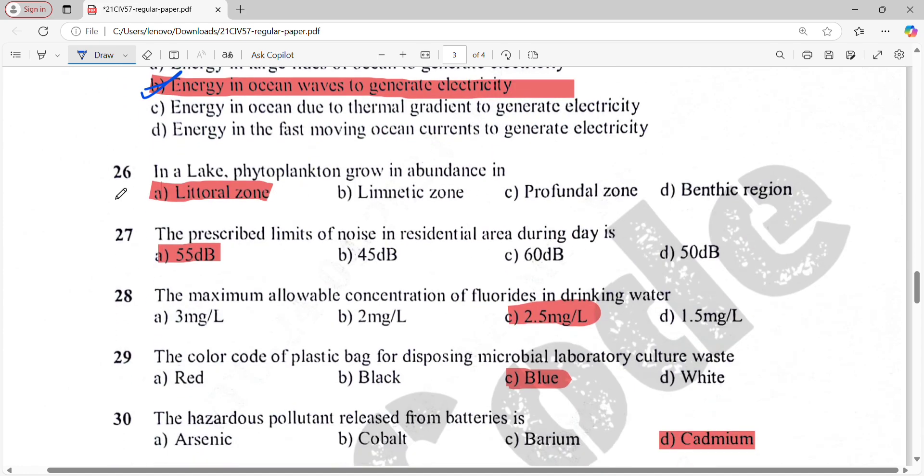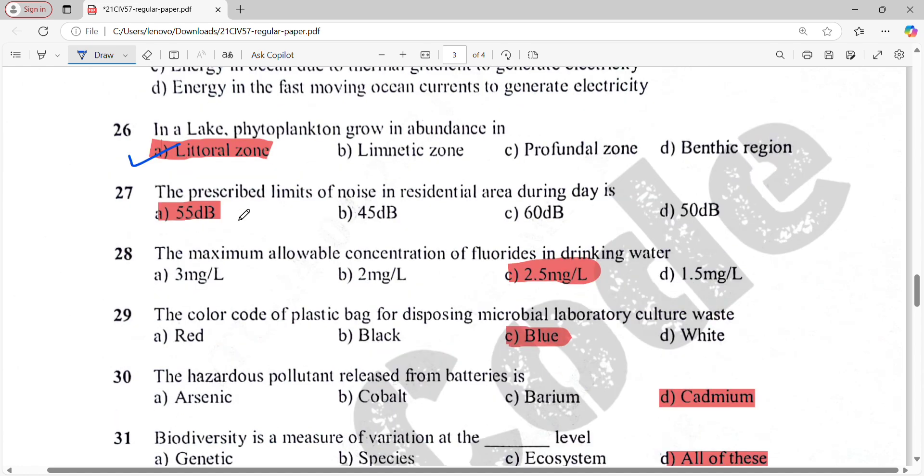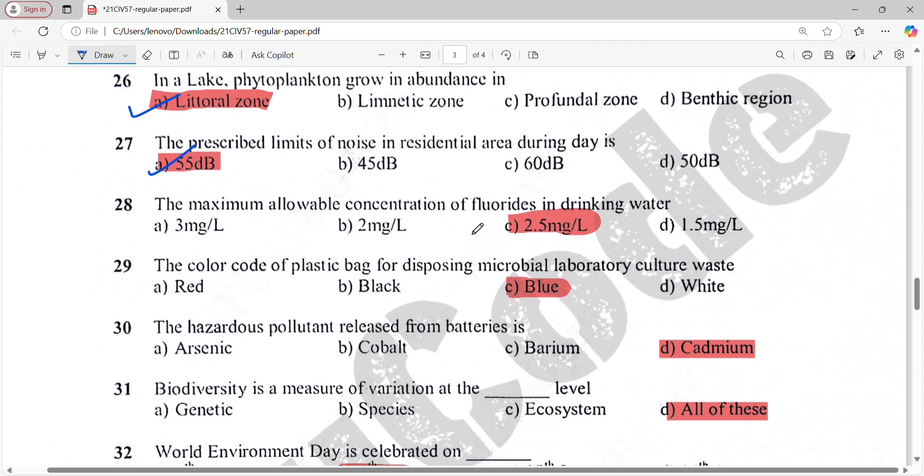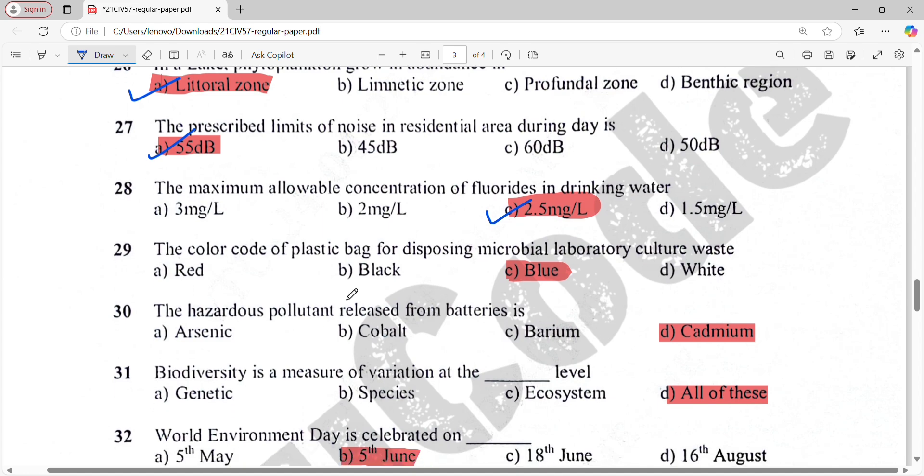The prescribed limits of noise in residential area during day is 55 dB. The maximum allowable concentration of fluorides in drinking water is 2.5 milligrams per liter.